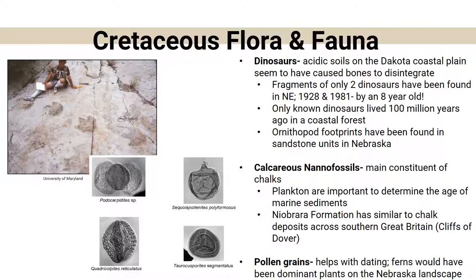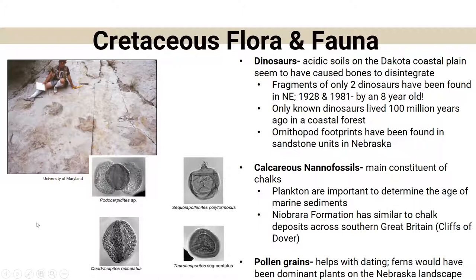We also have these calcareous nannofossils — very tiny plankton found in the Niobrara formation. Interestingly, the Niobrara chalk is the same type of rock found in the cliffs of Dover, which gives some insight into how the world looked that long ago. Pollen grains have also been found, which help with dating. Ferns were the dominant plants of Nebraska's landscape at that time, and small microscopic plant pollen has been identified. Ornithopod footprints have also been documented.